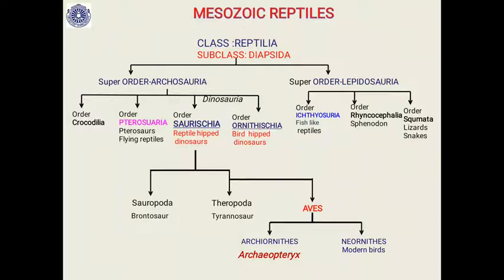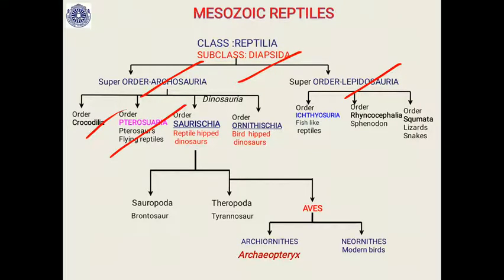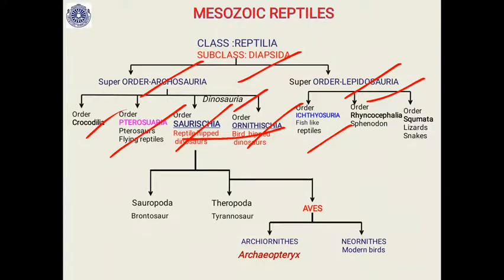Class Reptilia is divided into four subclasses: Anapsida, Diapsida, Parapsida, and Cynapsida. The Mesozoic reptiles we are studying belong to subclass Diapsida, which is divided into superorder Archosauria and superorder Lepidosauria. Archosauria includes order Crocodilia, order Pterosauria (flying reptiles), and orders Saurischia and Ornithischia — sometimes collectively called Dinosauria. Lepidosauria includes order Ichthyosauria, Rhynchocephalia, and Squamata (modern lizards and snakes).